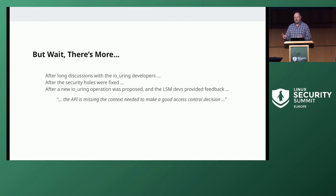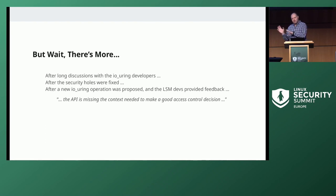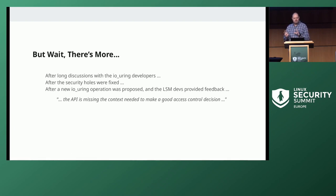Then as happens in the Linux kernel, new functionality came along. A new IOU Ring operation was proposed — something called a command pass-through. Some people notified the LSM group and asked what we thought. We looked at it and said the API doesn't have enough context for us to make a good access control decision — we need more information. And then things kind of went quiet for a couple months.